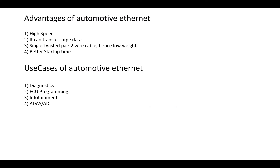When it comes to the advantages of Ethernet, the key one is high speed. It can transfer data at 10 Mbps, 100 Mbps, 1000 Mbps, and flexible speeds like 2.5 and 5 Gbps, with 25 Gbps about to be standardized. It can also transfer large data in a single frame — around 46 to 1500 bytes can be transferred.